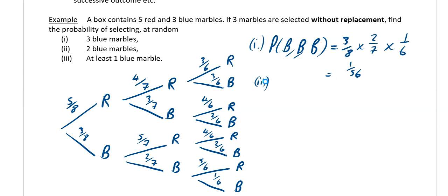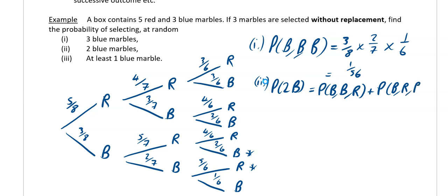Part two asks for the probability of two blues. There are a couple of ways of doing this. I could have blue, blue, red; or blue, red, blue; or red, blue, blue — those three branches. When you say 'or' in mathematics you add. So you do three multiplying sums and then add them together. I'm going to show you the long way first, and then the quicker smarter way.